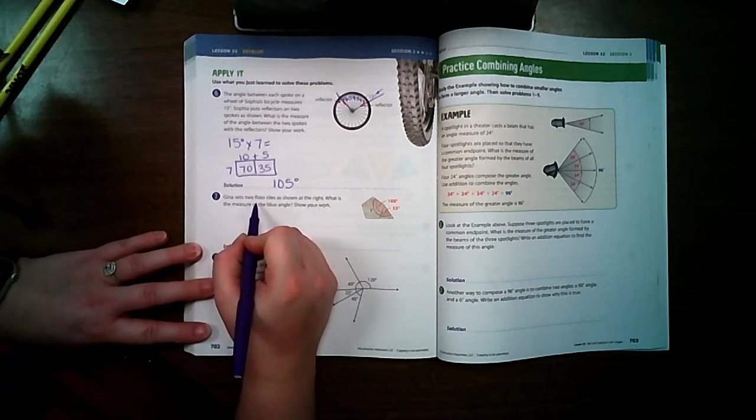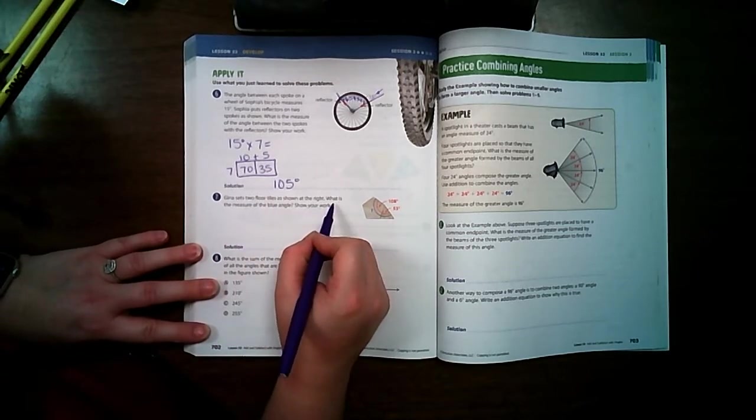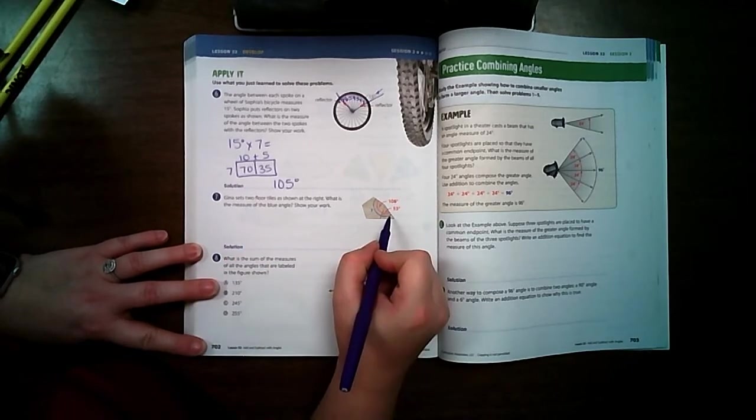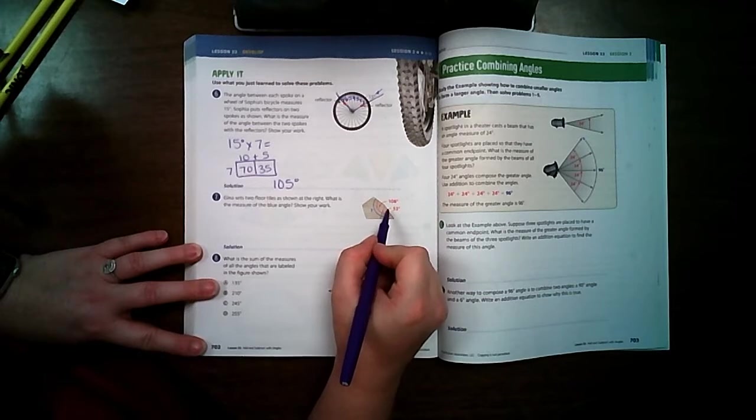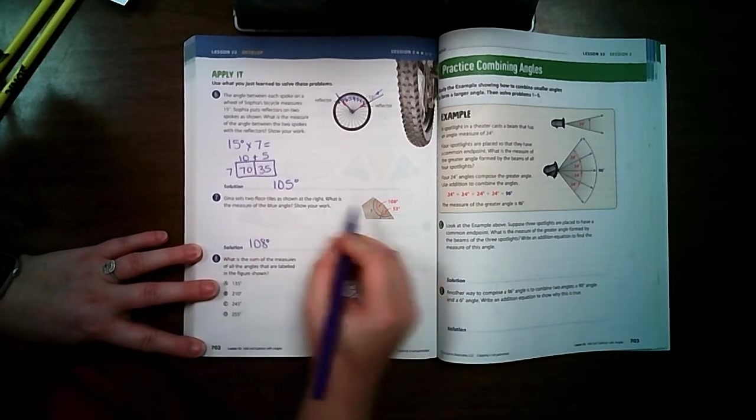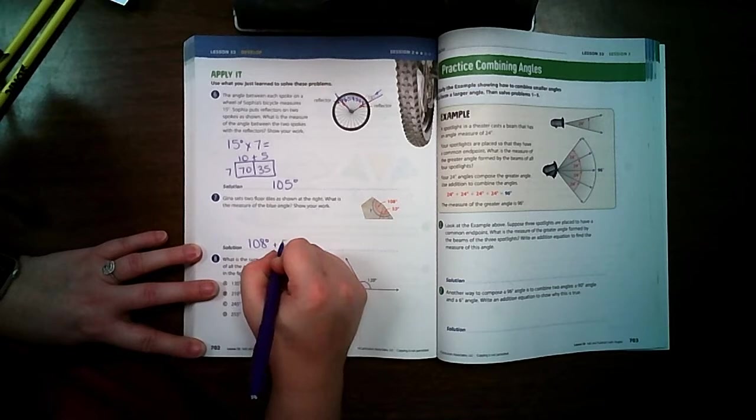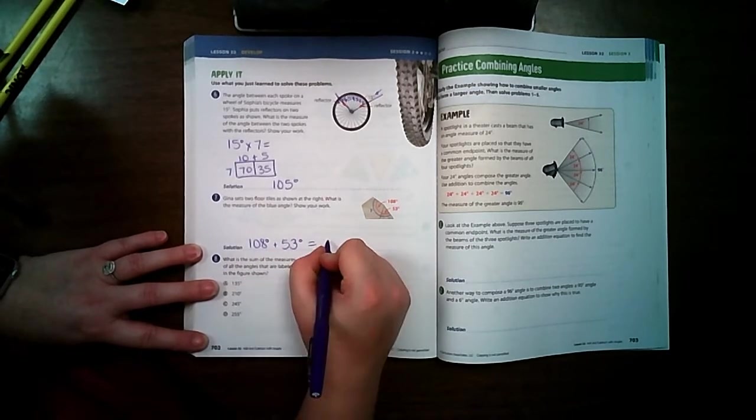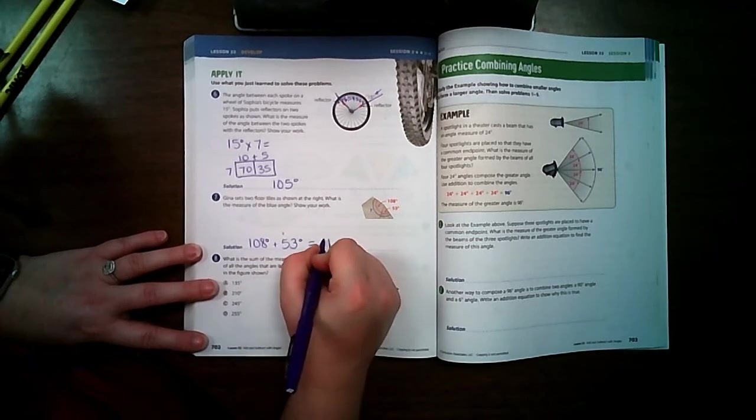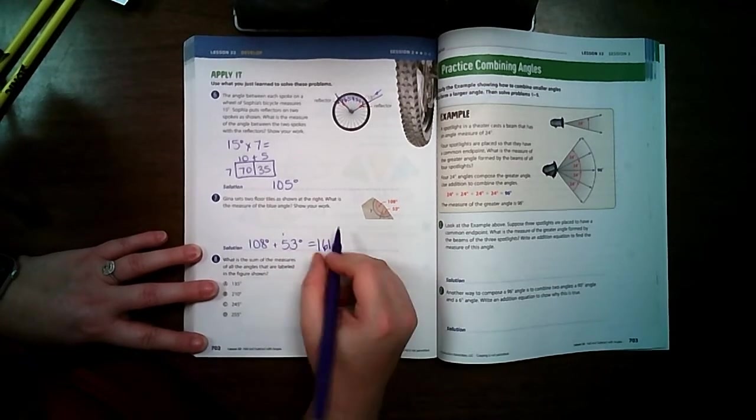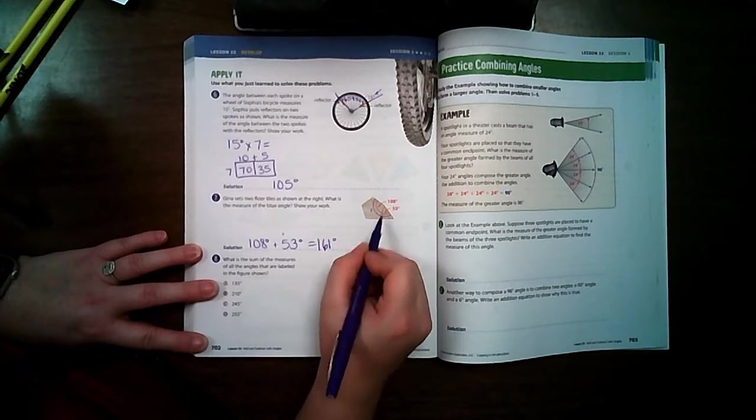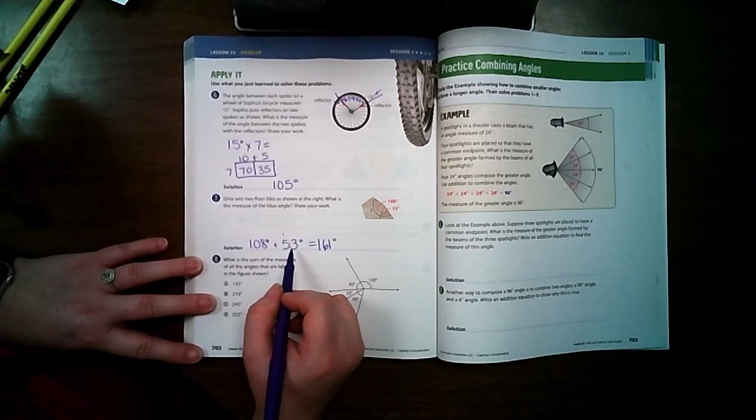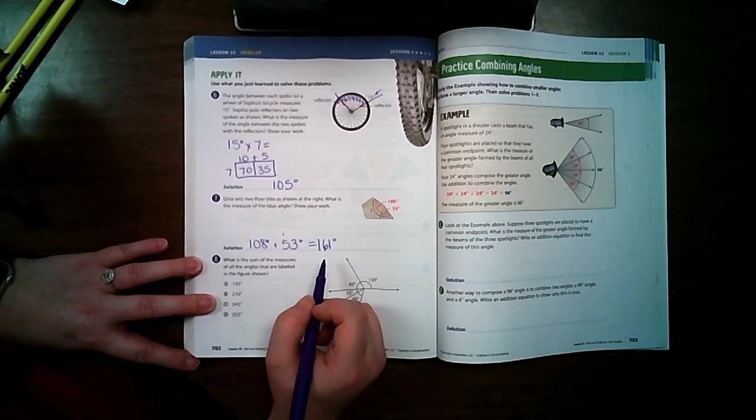Gina sets two floor tiles as shown at the right. What is the measure of the blue angle? Show your work. Okay, so I have these two tiles right here. I have 108 degrees plus 53 degrees equals. So 8, 9, 10, 11, carry a 1, 6, and 1. So the blue angle is 161 degrees because 108 plus 53 equals 161.